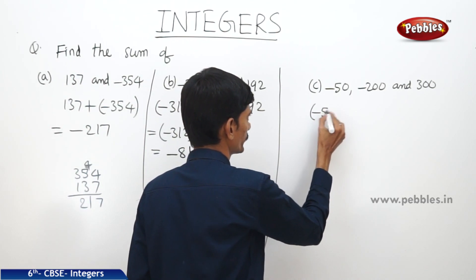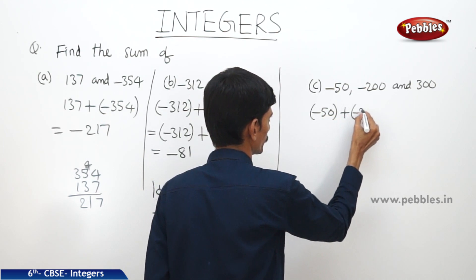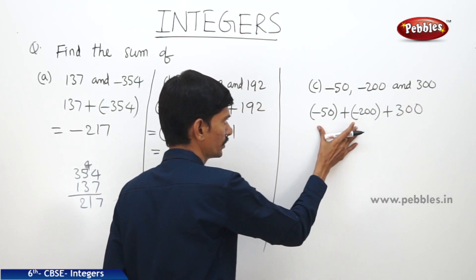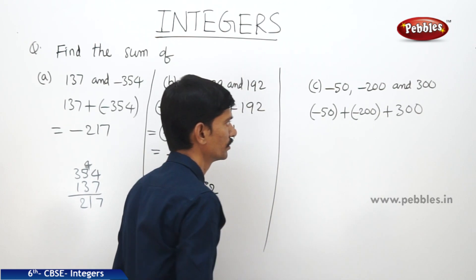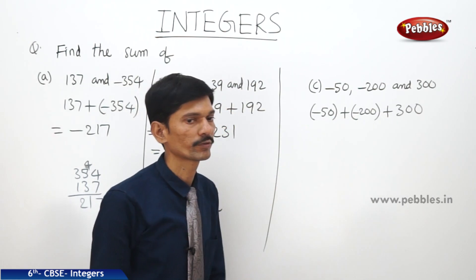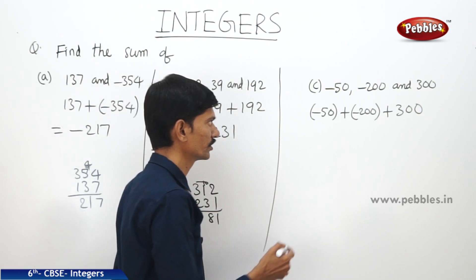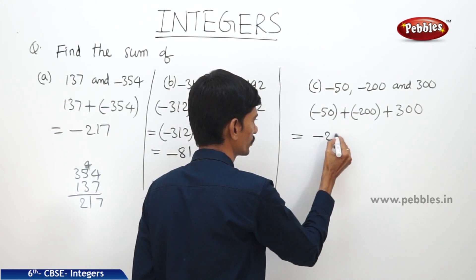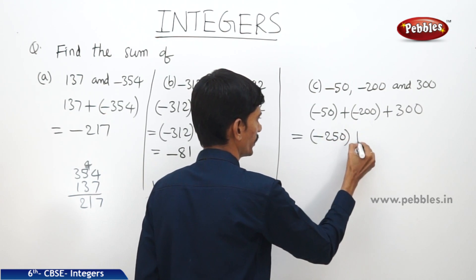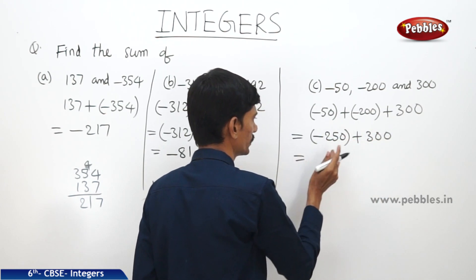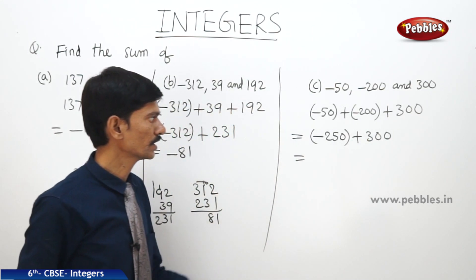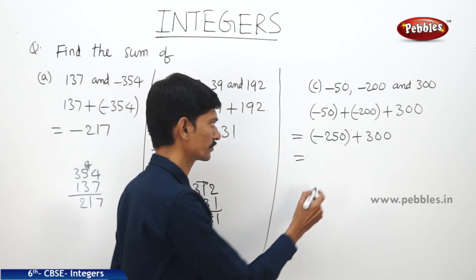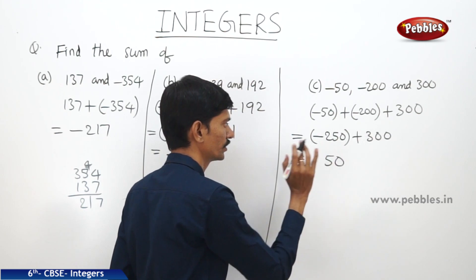Next, (-50) plus (-200) plus 300. Here two negative integers and a positive integer are added. We add the two negatives first: 200 plus 50 is 250, so we have minus 250 plus 300. Subtracting the smaller from the bigger: 300 minus 250 is 50, and the bigger number has a plus sign, so the answer is +50.